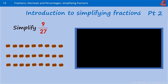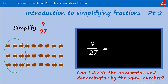Getting a little bit more tricky now. Pause the video, have a go. Simplify 9 out of 27. What can I divide 9 and 27 by? I know my 3 times table, and I know that 9 and 27 are in the 3 times table. So I'm going to divide them both by 3. 27 divided by 3 is 9.